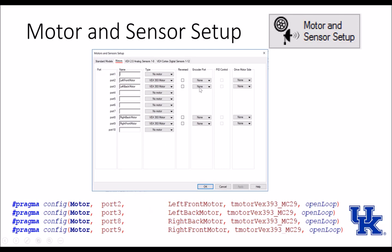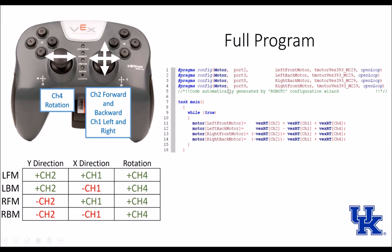When we want to program this, we go into the motor and sensor setup in RobotC, add our values there, and it develops our pragma. Then, referring to the matrix: the left front motor gets the true value of channel 2, true of channel 1, and true of channel 4. Left back gets true of 2, inverse of 1, true of 4. Right front gets inverse of 2, true of 1, true of 4. Right back gets inverse of 2, inverse of 1, and true of 4.